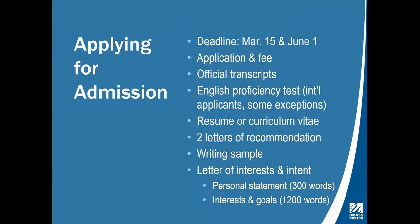We can accept letters from supervisors or employers, but we prefer letters from professors who have taught you, since we're assessing academic potential. We also ask for a writing sample — your own original, sole-authored work, ideally five to ten pages, demonstrating your ability to express ideas in writing and the quality of your analytical skills. Most importantly, we ask for a personal statement. I recommend starting with about 300 words describing your background, then moving into your interests and goals — why you want the MA in International Relations at UMass Boston, what you plan to do with the degree, and your academic goals for the future.